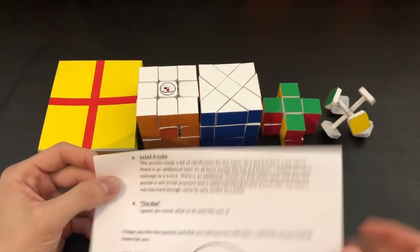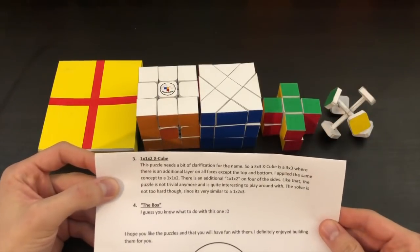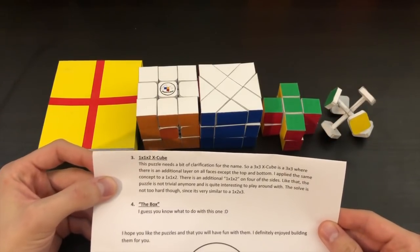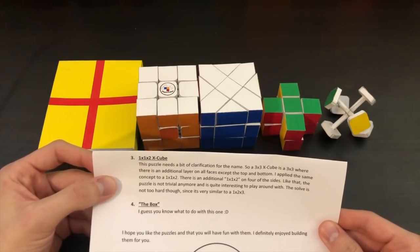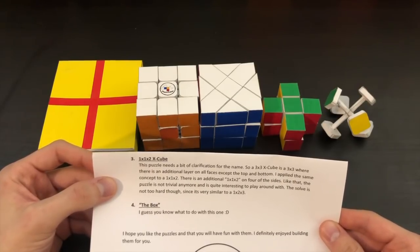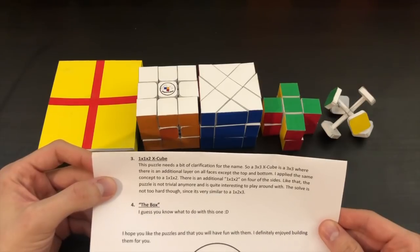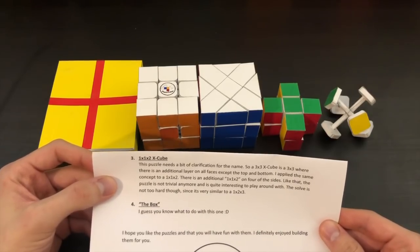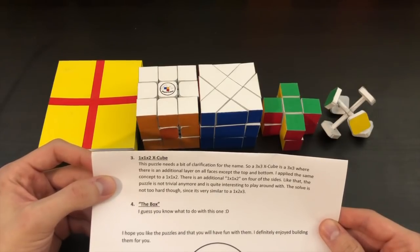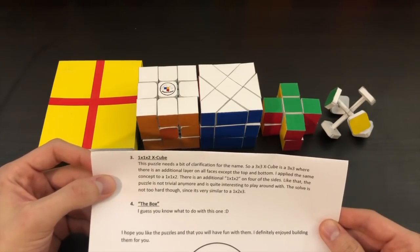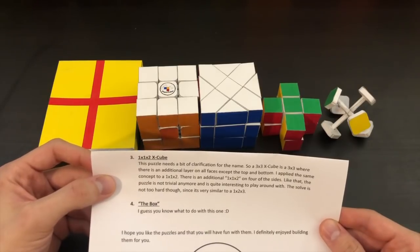The 1x1x2x cube. That's this third one right here. This puzzle needs a bit of clarification for the name. So a 3x3x cube is a 3x3 where there is an additional layer on all faces except the top and bottom. I apply the same concept to a 1x1x2. There's an additional 1x1x2 on 4 of the sides. Like that the puzzle is not trivial anymore and is quite interesting to play around with. The solve is not too hard though since it's very similar to a 1x2x3.